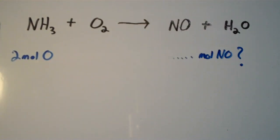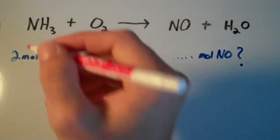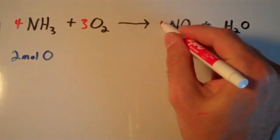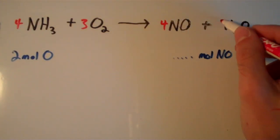First, we need to balance this equation. This equation is not balanced so we must balance it. It looks like I'll get a 4 here, a 3 here, another 4 here, and then a 6 over here.